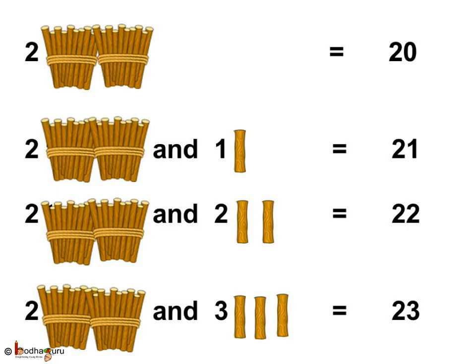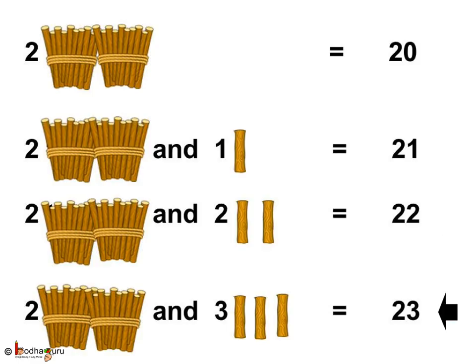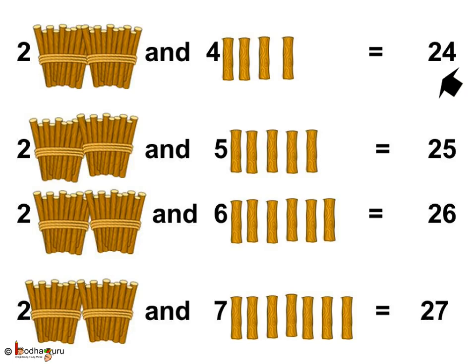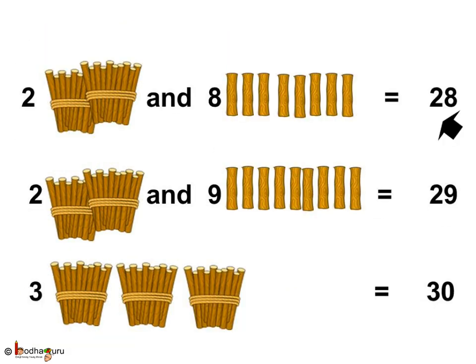Let us summarize: 2 tens is 20; 2 tens and 1 is 21; 2 tens and 2 is 22; 2 tens and 3 is 23; 2 tens and 4 is 24; 2 tens and 5 is 25; 2 tens and 6 is 26; 2 tens and 7 is 27; 2 tens and 8 is 28; 2 tens and 9 is 29; 3 tens is 30. Now you can count from 1 to 30!